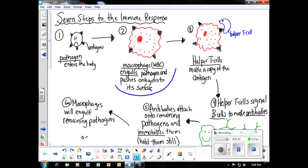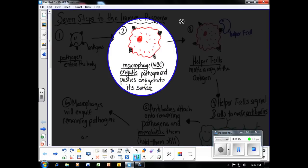Step two in the immune response is that the pathogen has to be identified and marked by the body. This is done by our macrophages. A macrophage is a white blood cell that will engulf or eat up the pathogen and push its antigens to its surface. This will alert the rest of the white blood cells that an invader is in the body.